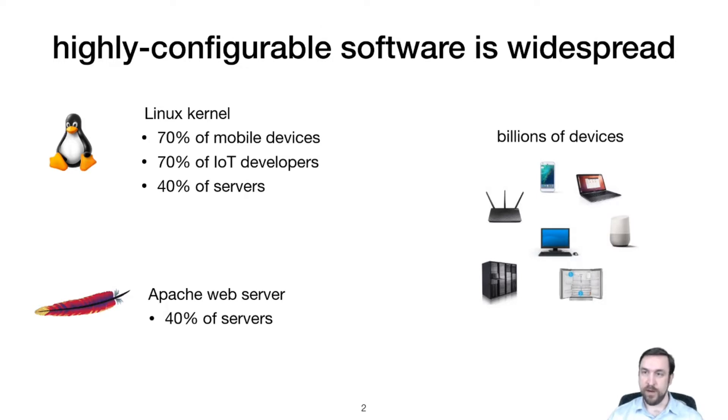Highly configurable software underpins much of our computing infrastructure because configurability enables reuse without having to reprogram software. The Linux kernel for instance is used in billions of devices and its extreme configurability is what makes this possible.